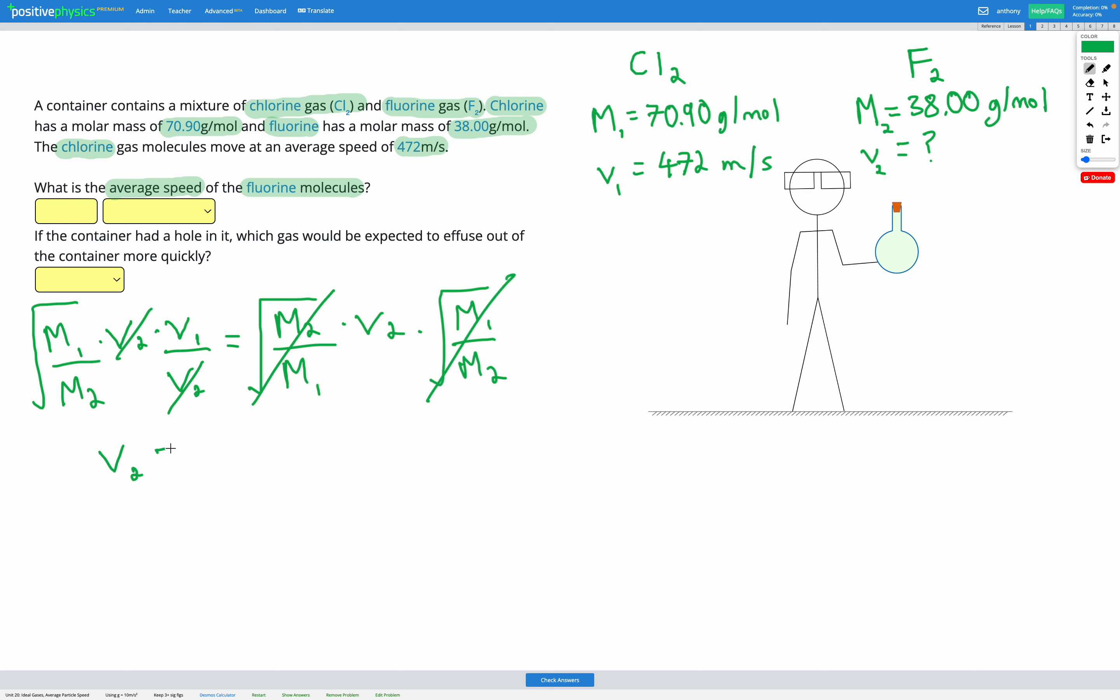leaving us with V2 equals V1 multiplied by the square root of M1 divided by M2. Now I can just put in my numbers. V1 is 472 multiplied by the square root of M1, which is 70.90 divided by M2, which is 38.00.